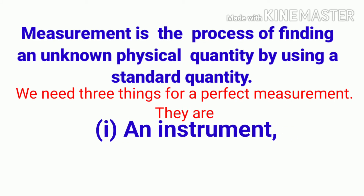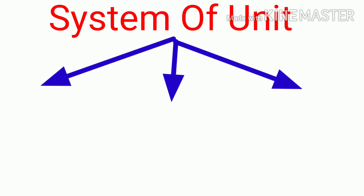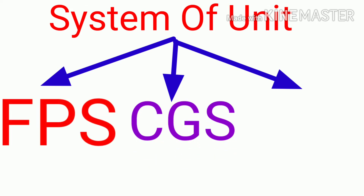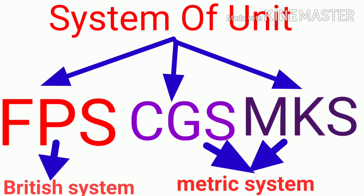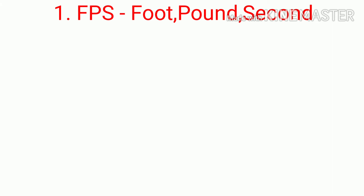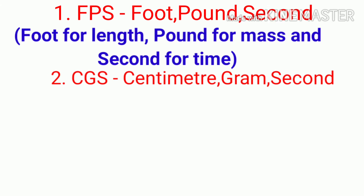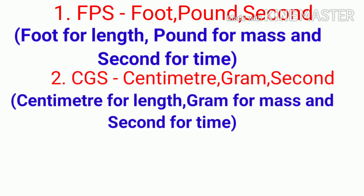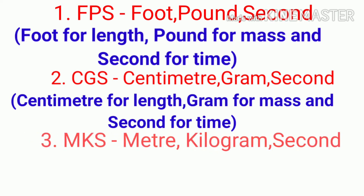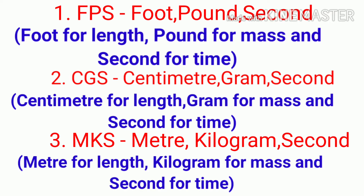Those three things are: an instrument, a standard quantity, and an acceptable unit. Next, system of units. There are three types: first FPS, second CGS, third MKS. FPS is the British system; CGS and MKS are the metric system. FPS: foot for length, pound for mass, and second for time. CGS: centimeter for length, gram for mass, and second for time. MKS: meter for length, kilogram for mass, and second for time.